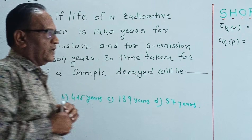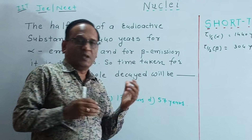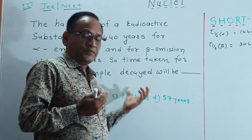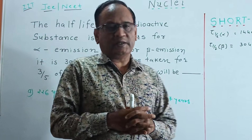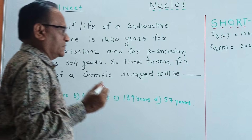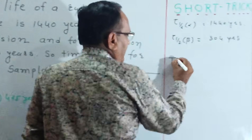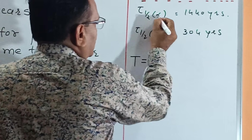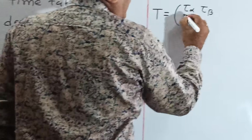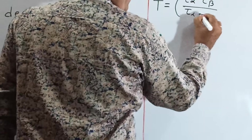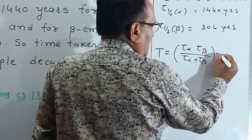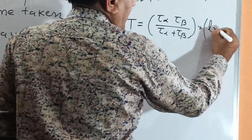It is very difficult to solve using n, n0, and the exponential function directly. So I give the best shortcut method for solving it, which is very important for JEE. The shortcut: time t equals tau-alpha times tau-beta divided by (tau-alpha plus tau-beta), multiplied by ln(x).